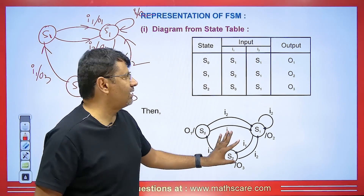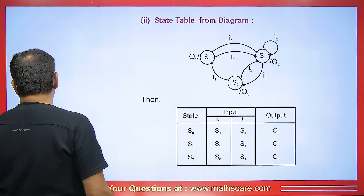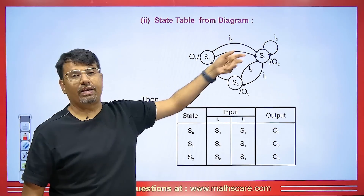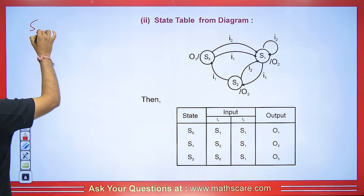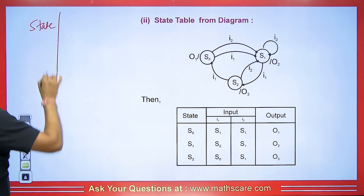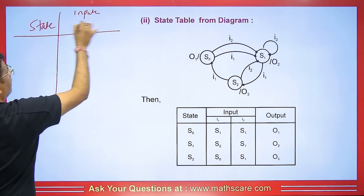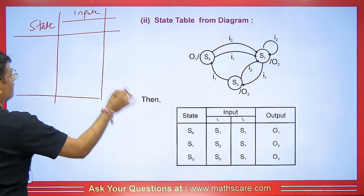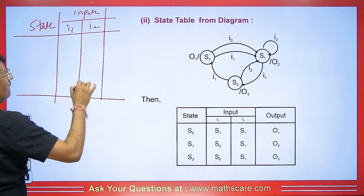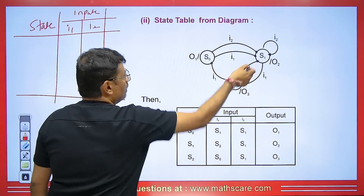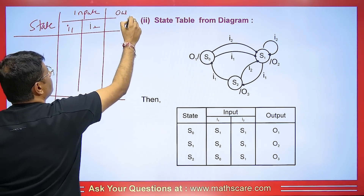Sometimes it is just the other way around — we have a diagram and we have to make a table from it. First of all, we will write the state here, then we will have the input. We will write input I1 and I2, and the output O1, O2, O3.